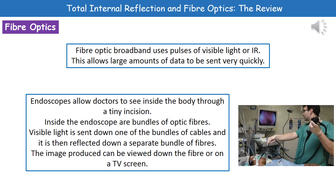A second use is in devices called endoscopes. An endoscope is a device that allows a doctor to see inside the body through a very small incision. Inside the endoscope are bundles of optic fibres — visible light is sent down one bundle into the body, reflected back down a separate bundle, and the resulting image can either be viewed directly through the fibre or transferred onto a computer screen.